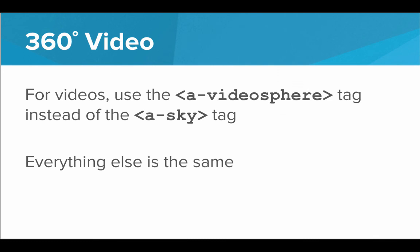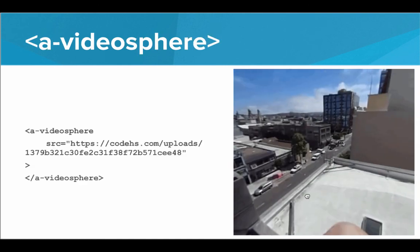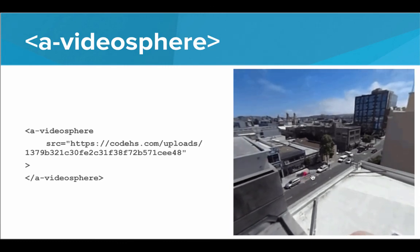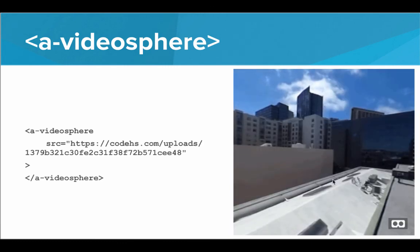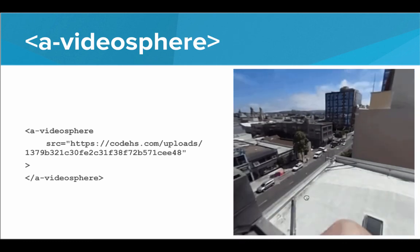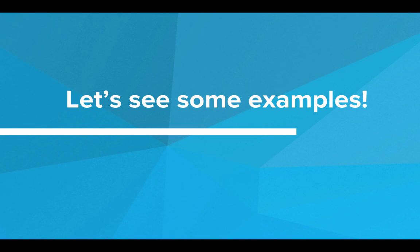If you took a video instead of an image, all you need to do is use the a-videosphere tag instead of the a-sky tag — everything else is the same. Set the SRC equal to the URL of the uploaded video, and you can stand in the middle and look around and view the video as if you were standing right there. So that is how we can use 360 degree images and videos. Let's dive in and see some examples of this in action.